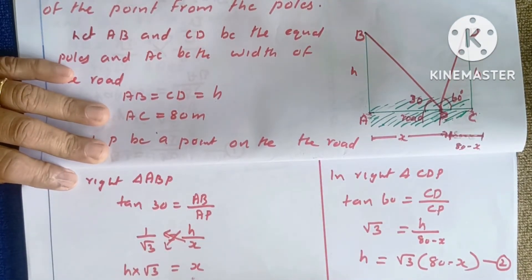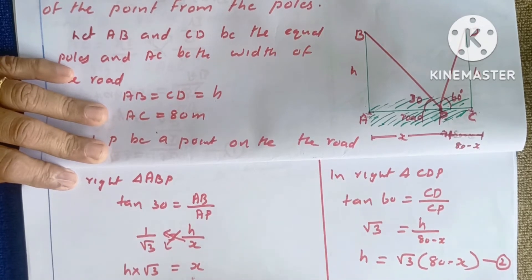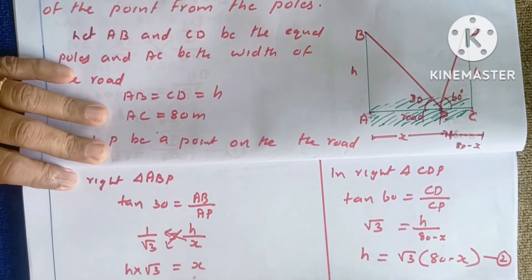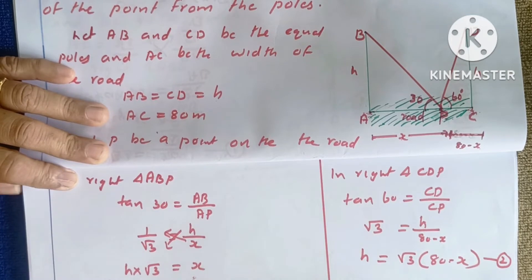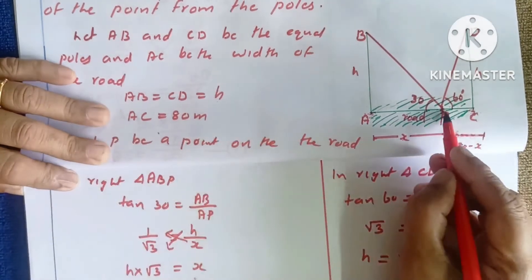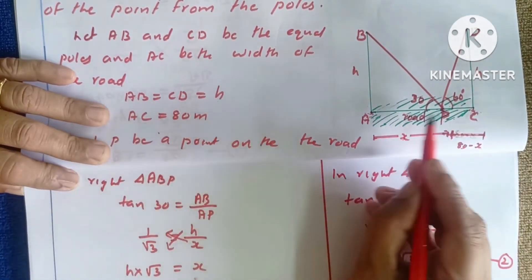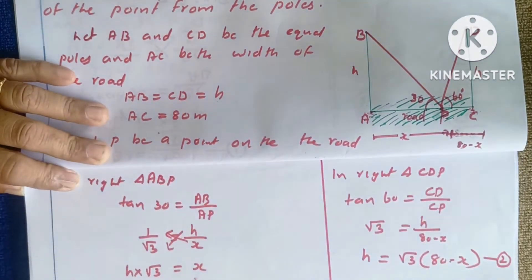Therefore, CP length is 20 meters and AP length is 60 meters. The distance of the point from pole AB is 60 meters and from pole CD is 20 meters.